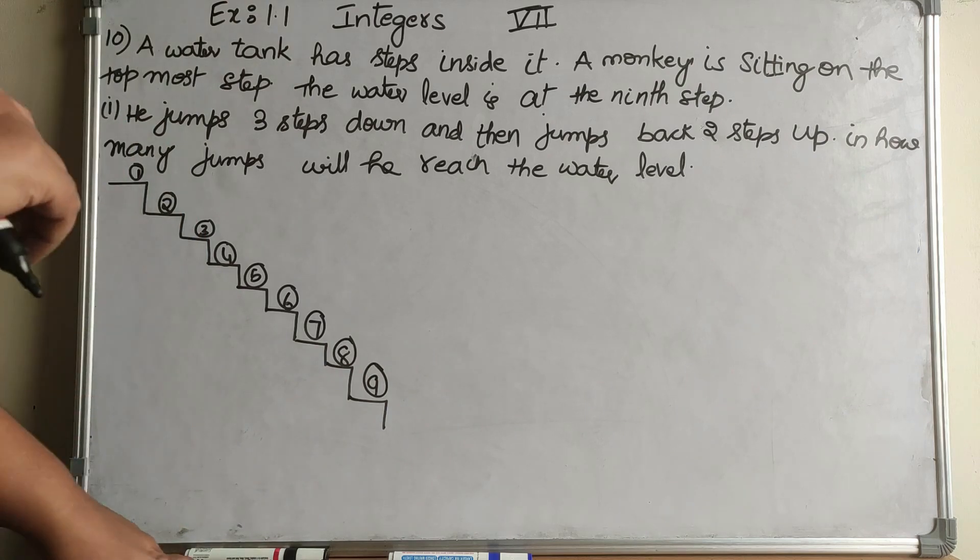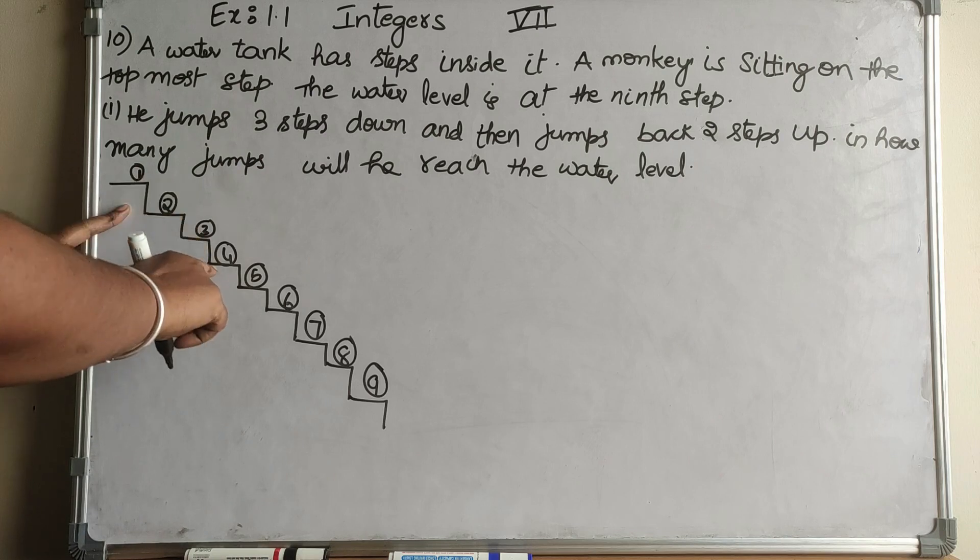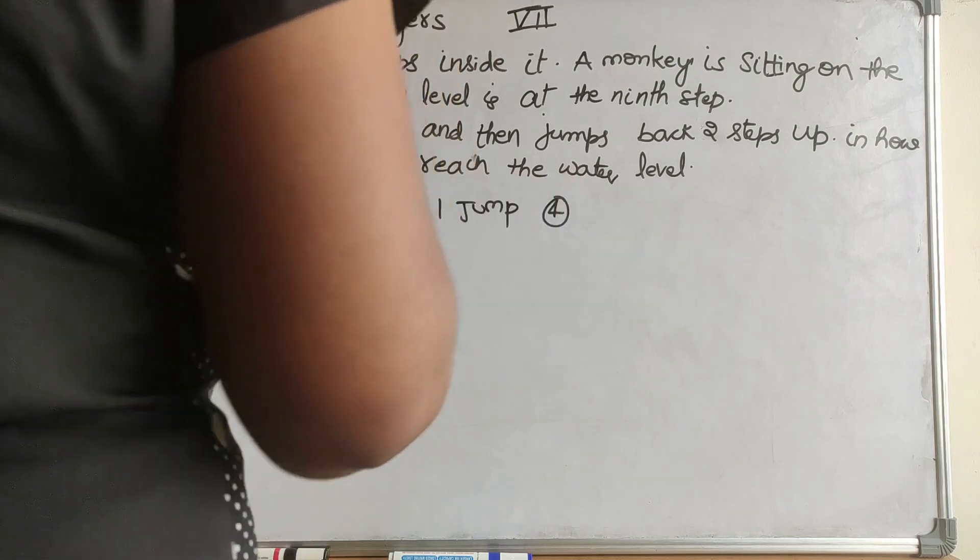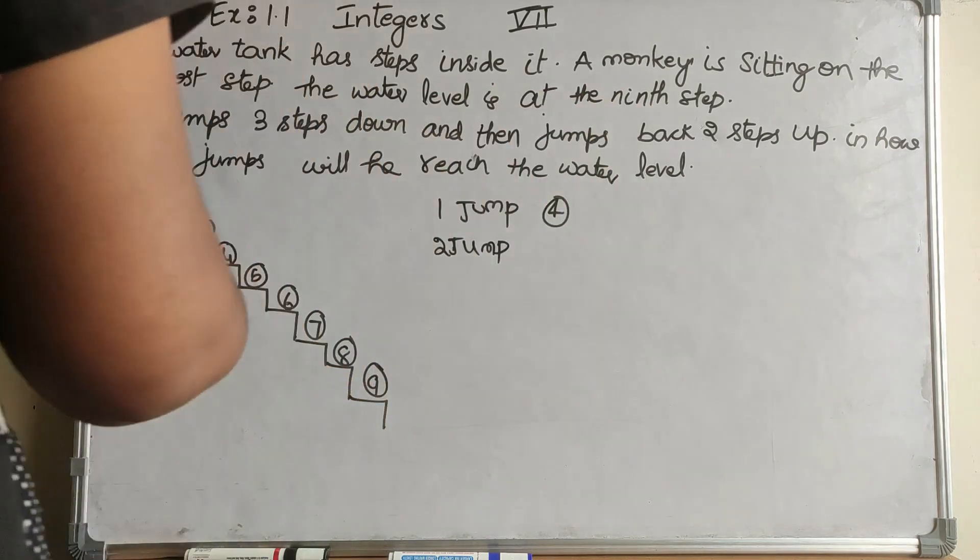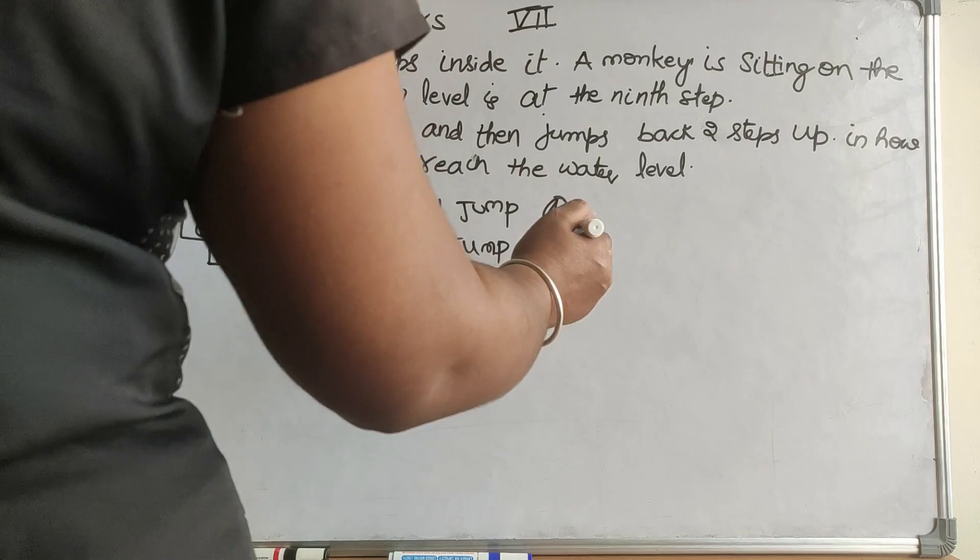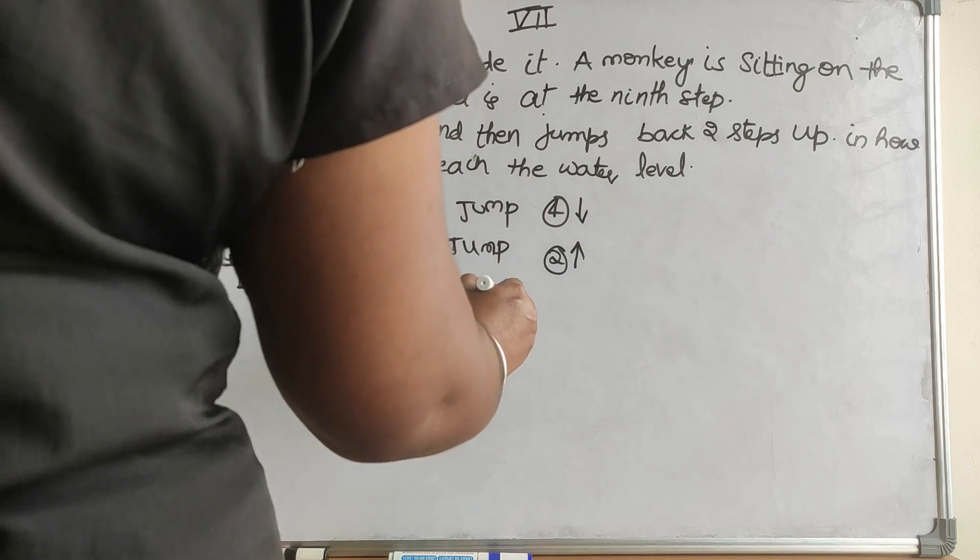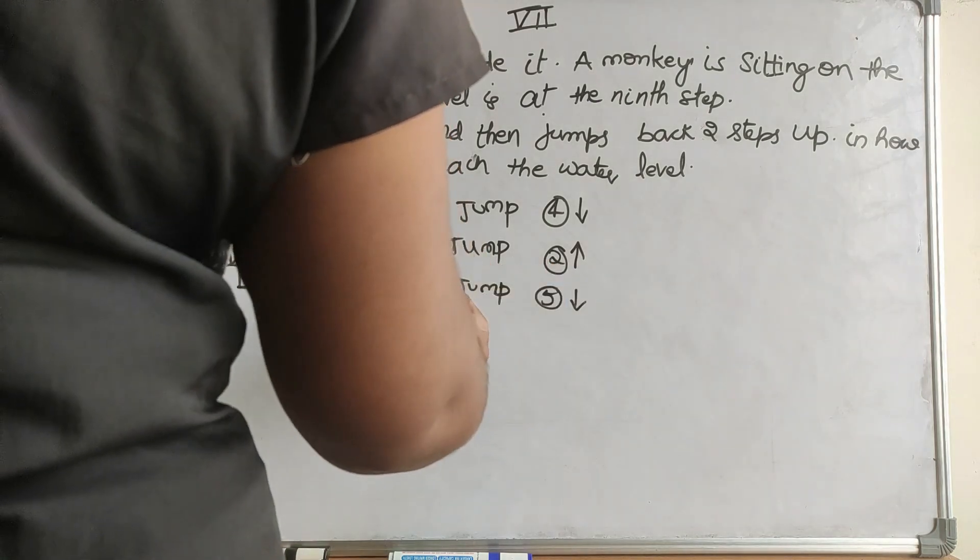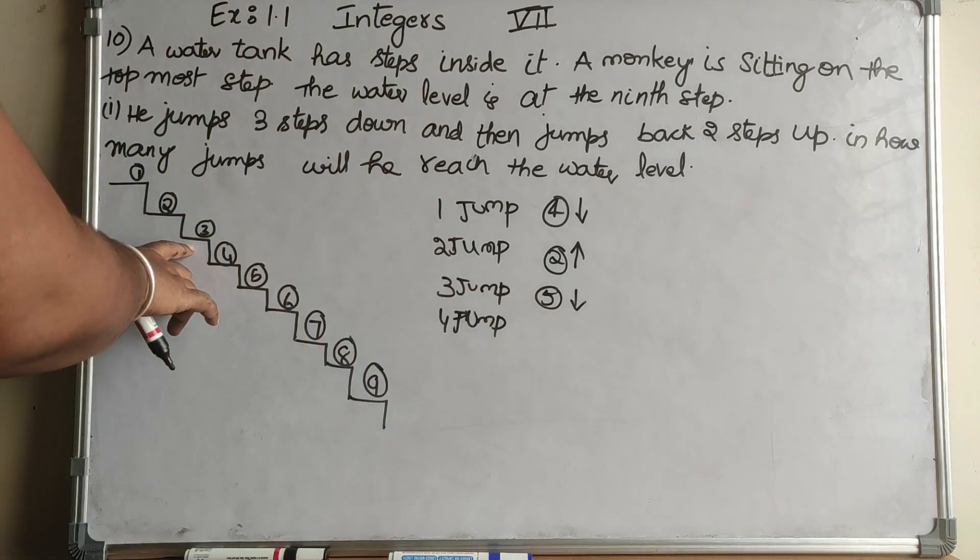First jump, it goes 3 steps down from 1 to the 4th step. Second jump, it goes back 2 steps from 4th to 2nd. This is coming down, this is going up. Third jump, it goes 3 steps down to 5th. Fourth jump, it goes 2 steps up to 3rd.